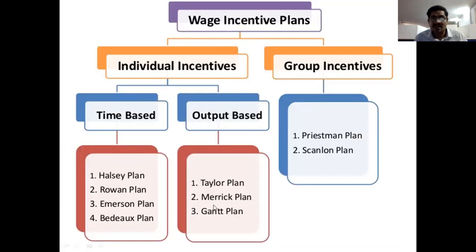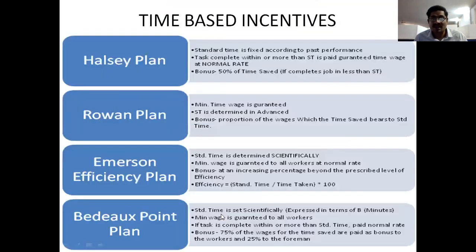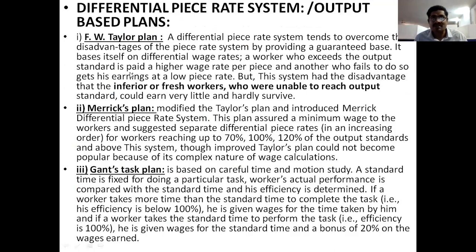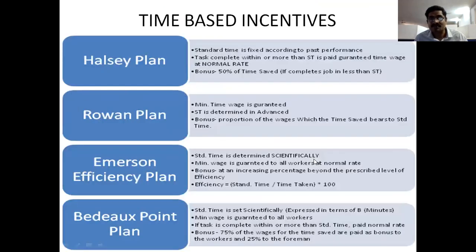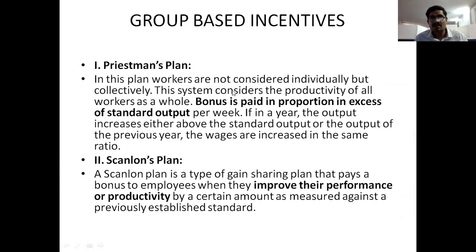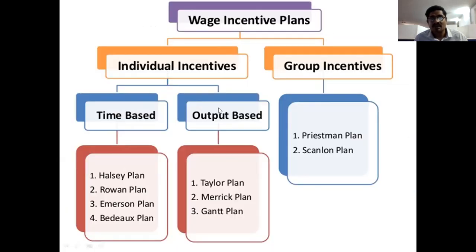Next, output-based incentives — Tyler, Merrick, and Gantt. For group incentives, we have two plans: Priestman and Scanlon. Coming to output-based incentives: incentive means extra payment giving to the workers based upon excellent performance, attached with wages as wage plus incentives.